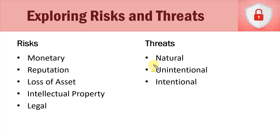Moving up to unintentional threats — these happen by accident. For example, a network administrator takes his coffee into the server room, sets it on the rack, and accidentally spills it, frying one of the motherboards on a server. It's an accident, it's unintentional, but it's still a potential threat.